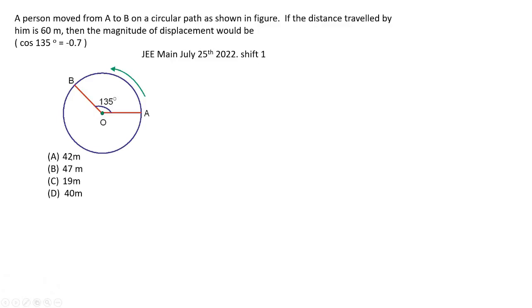Hello. In this video, let us solve this problem. A person moved from A to B on a circular path as shown in figure. If the distance traveled by him is 60 meter, then the magnitude of displacement would be, cos 135 is equal to minus 0.7. This question was asked in JEE Main, July 25, 2022, Shift 1, Physics.